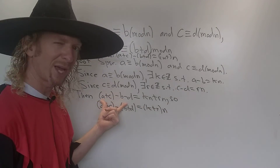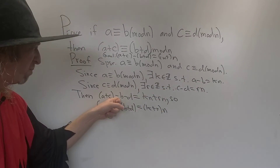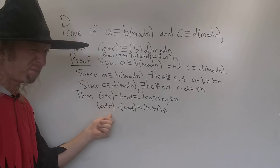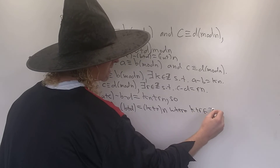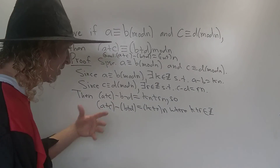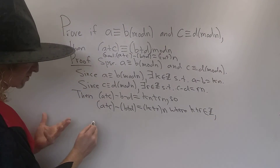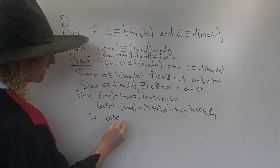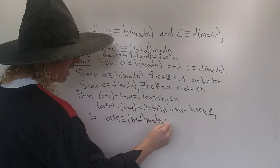Now this part needs to be said: K is an integer, R is an integer, therefore K plus R is also an integer. So A plus C minus B plus D is a multiple of N, and this is precisely the assertion that A plus C is congruent to B plus D modulo N. And that completes the proof.